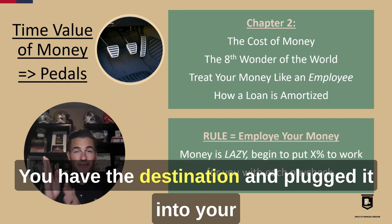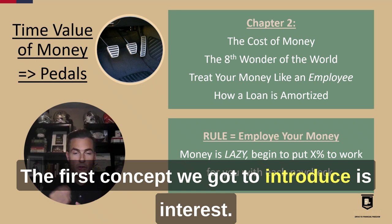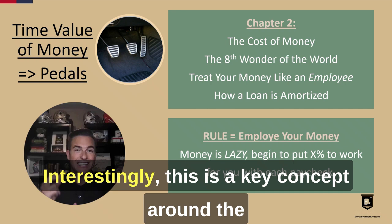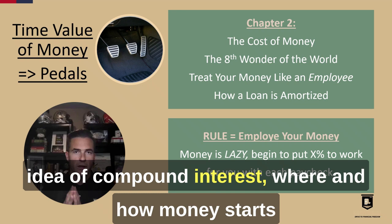You have the destination plugged into your GPS, but you want to get the vehicle moving. This is where we will introduce the time value of money through our gas and our brake pedals. The first concept we've got to introduce is interest — a key concept around the cost of borrowing and using other people's money. Then we get to introduce the eighth wonder of the world: compound interest, where and how money starts to go to work for you in creating more money.